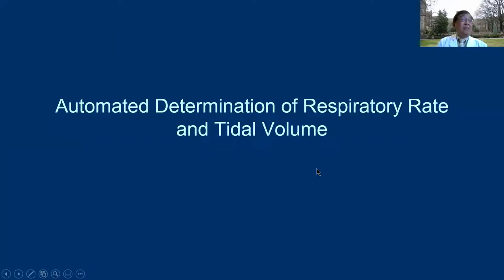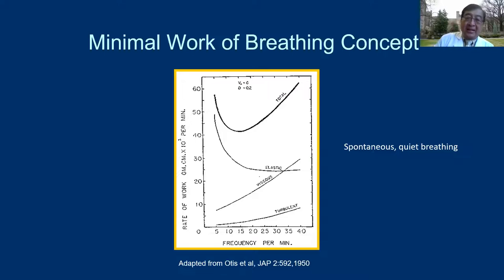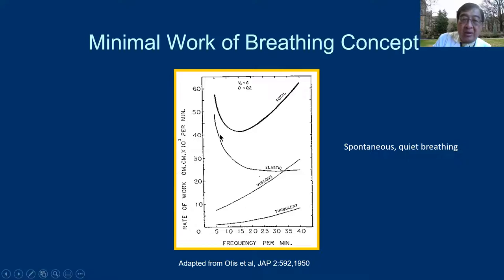Closed-loop ventilation — focusing today on ASV and AVM — these two modes give a recommended respiratory rate and tidal volume based on lung mechanics. Before discussing that, I'll cover several key concepts. Otis in 1950 performed experiments on four spontaneously breathing quiet subjects and found that the work of breathing can be divided into three components: resistive work (increasing with higher respiratory rate), elastic work (increasing with lower rate because lung volume is larger), and viscous/density-dependent work in between.